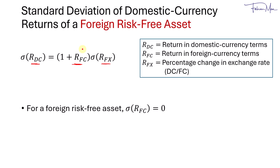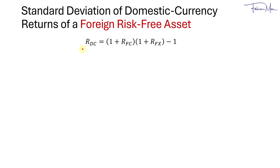To see how this formula is derived, we start with the return in domestic currency terms, which equals 1 plus the return in foreign currency terms, multiplied by 1 plus the percentage change in the exchange rate, minus 1. Expanding the brackets, this is what we get.